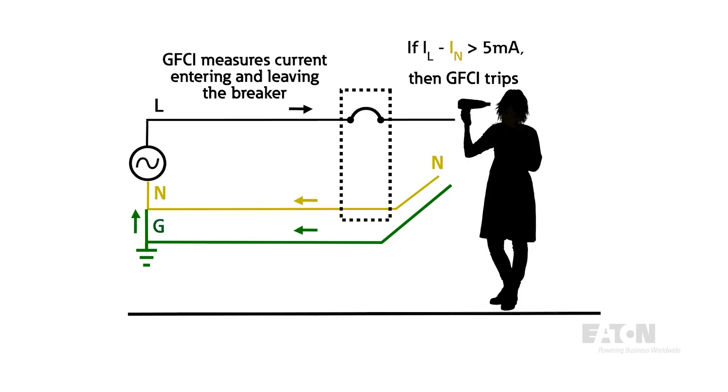We know the amount of current leaving the breaker and we can also measure how much comes back. If there's enough of a difference, 5 milliamps for people protection and 30 milliamps for equipment protection, then the breaker knows there's a leak somewhere and will immediately open.